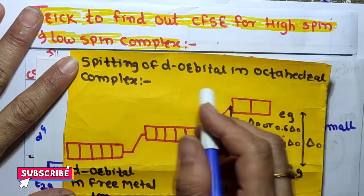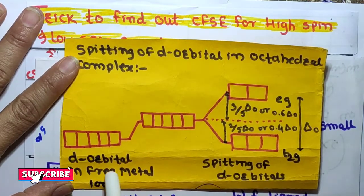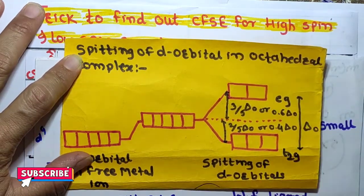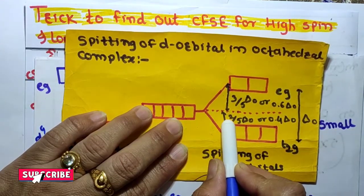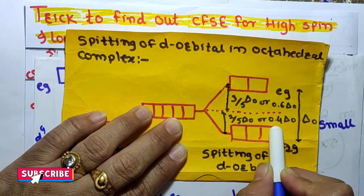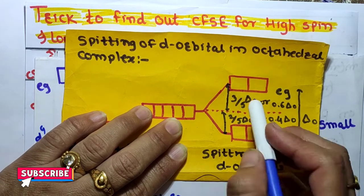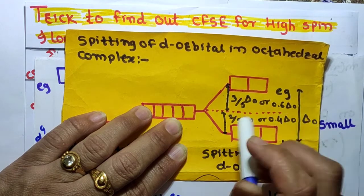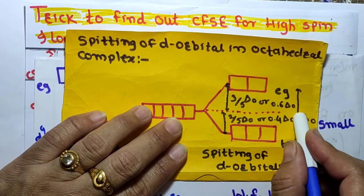First, let's look at the splitting of d orbitals in an octahedral complex. The d orbitals split into two groups: the t2g group at the lower energy level and the eg group at the higher energy level. The t2g group has energy of 2/5 ΔO or 0.4 ΔO, and the eg level has energy of 3/5 ΔO or 0.6 ΔO.